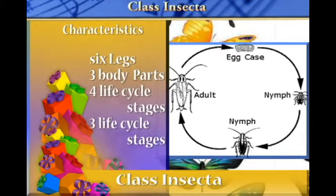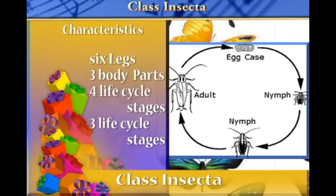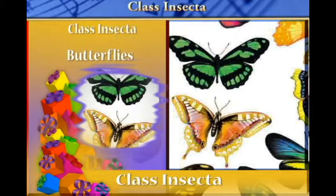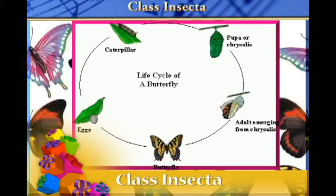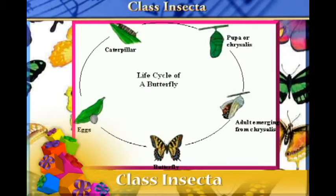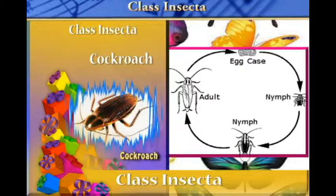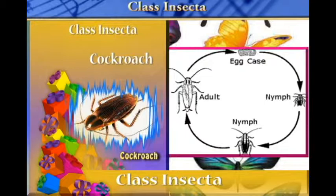Organisms like the butterfly have a four-stage life cycle where they go through the egg, the larva, the pupa, and the adult. Organisms like the cockroach have a three-stage life cycle where they go through the egg, the nymph, and the adult.